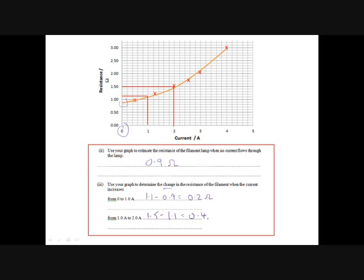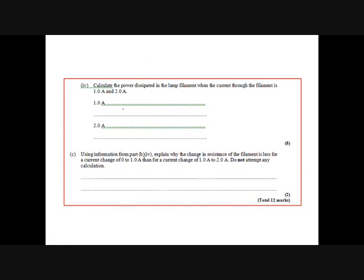Calculate the power dissipated in the filament lamp when the current is 1 amp and 2 amps. Our best equation to use here, because we've just worked out the resistance, is P equals I squared R. So with 1 amp, that's 1 squared times 1.1, which is 1.1 watts. And then at 2 amps, we could use P equals VI because that's in the table, but if we use I squared R again, that's 2 squared times 1.5, which is 6 watts.